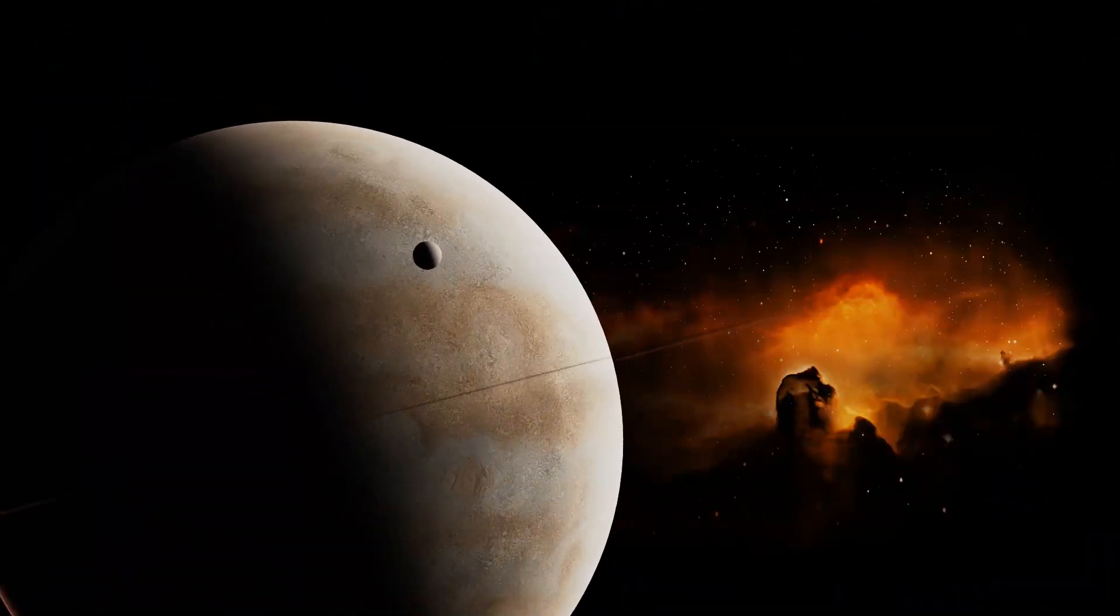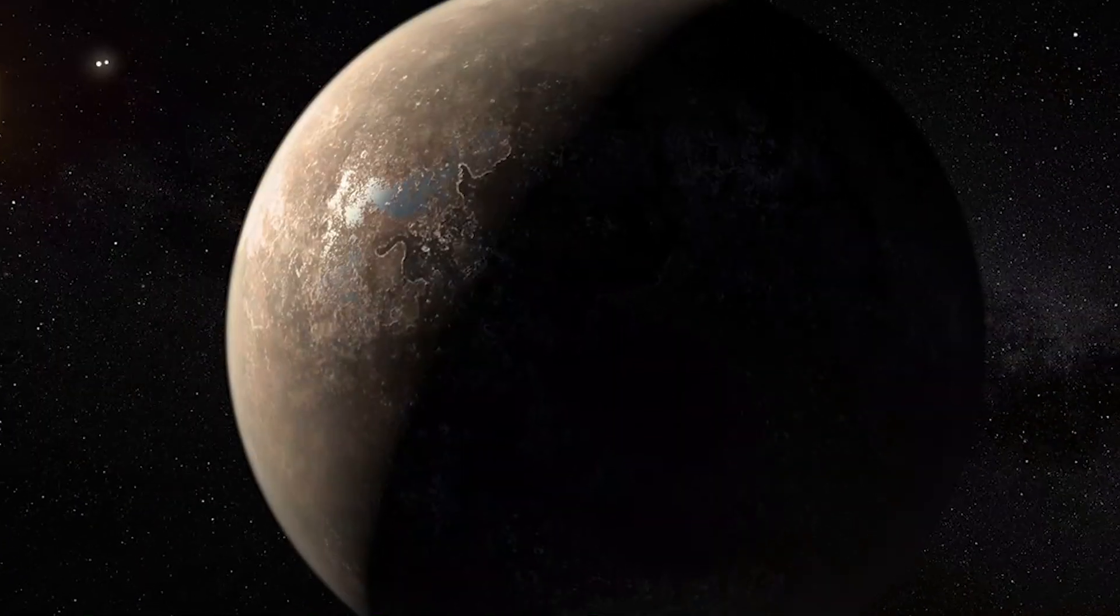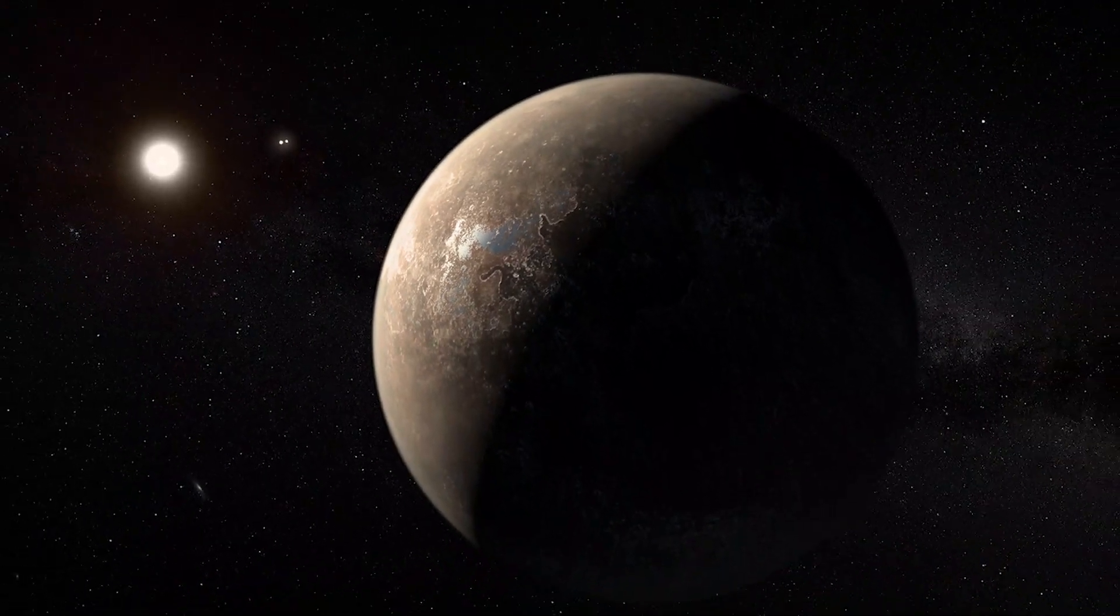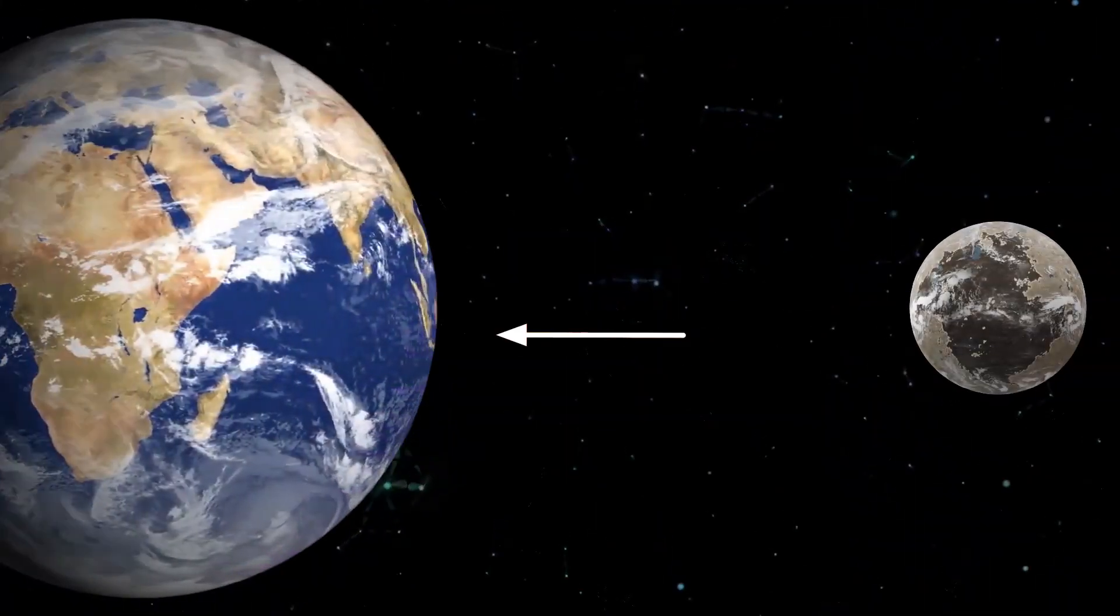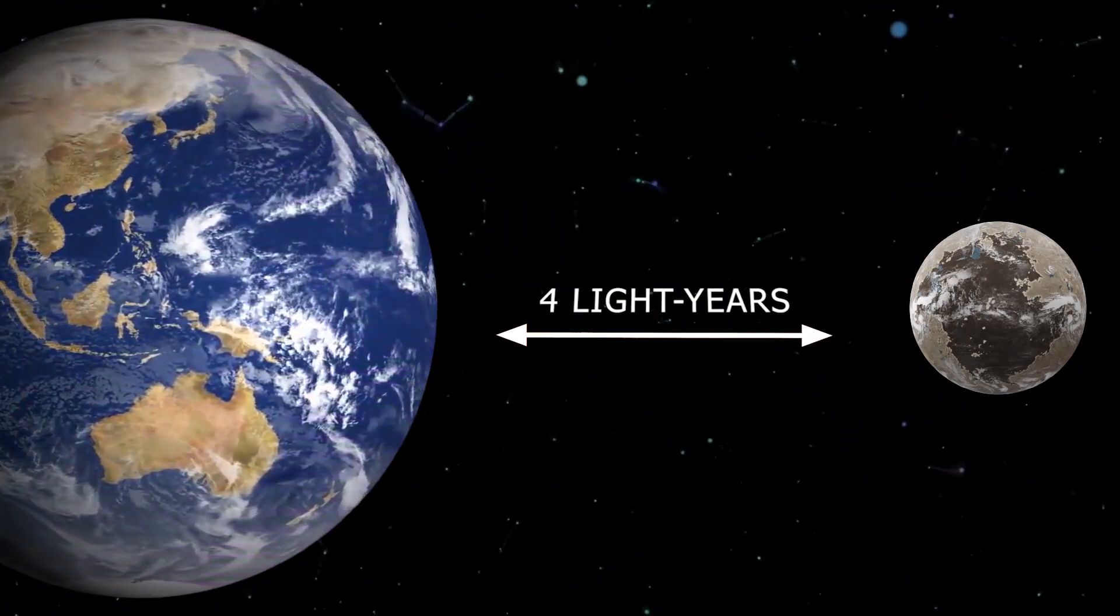Of all the 4,000-plus exoplanets, the only ones that have intrigued scientists so far have been the Proxima b exoplanets. The planet has a recent discovery, which was discovered in 2016, located about four light years away from the Earth. It is regarded as the closest exoplanet to the Earth.